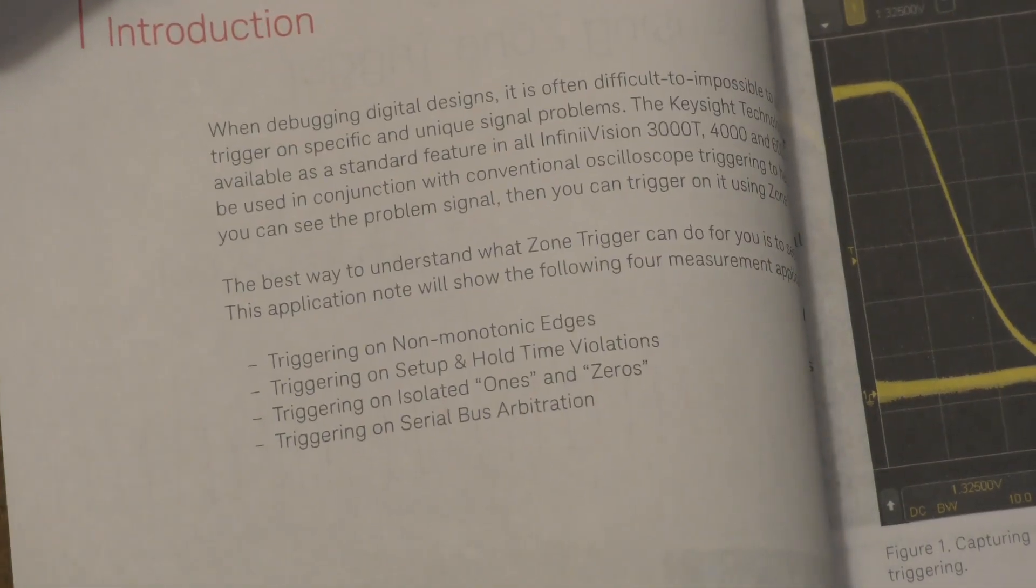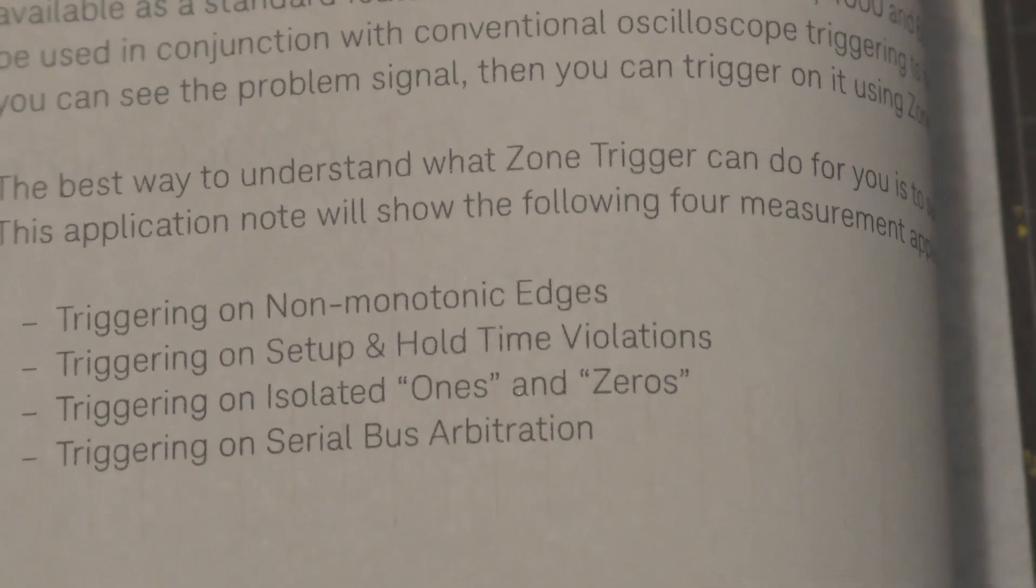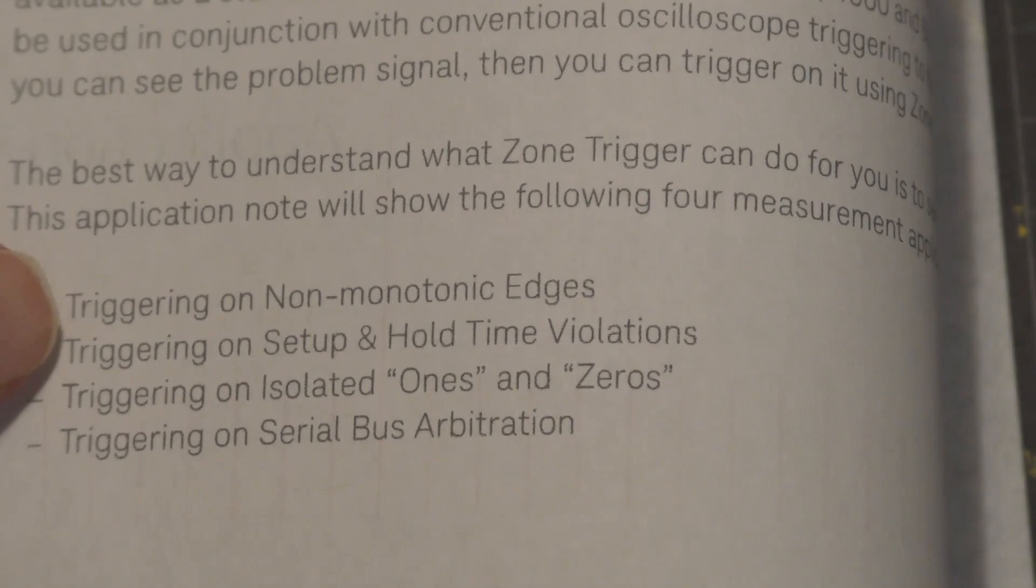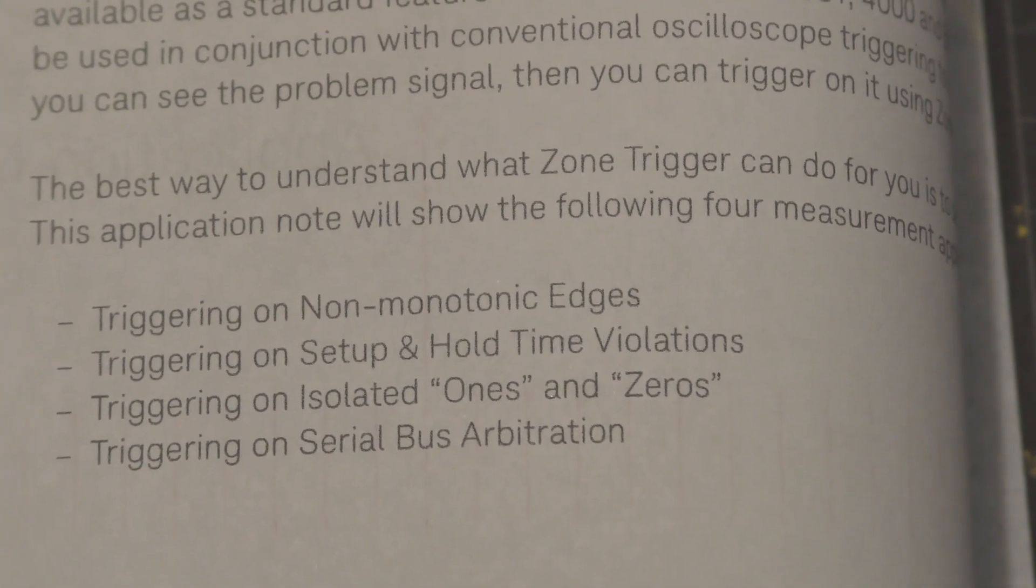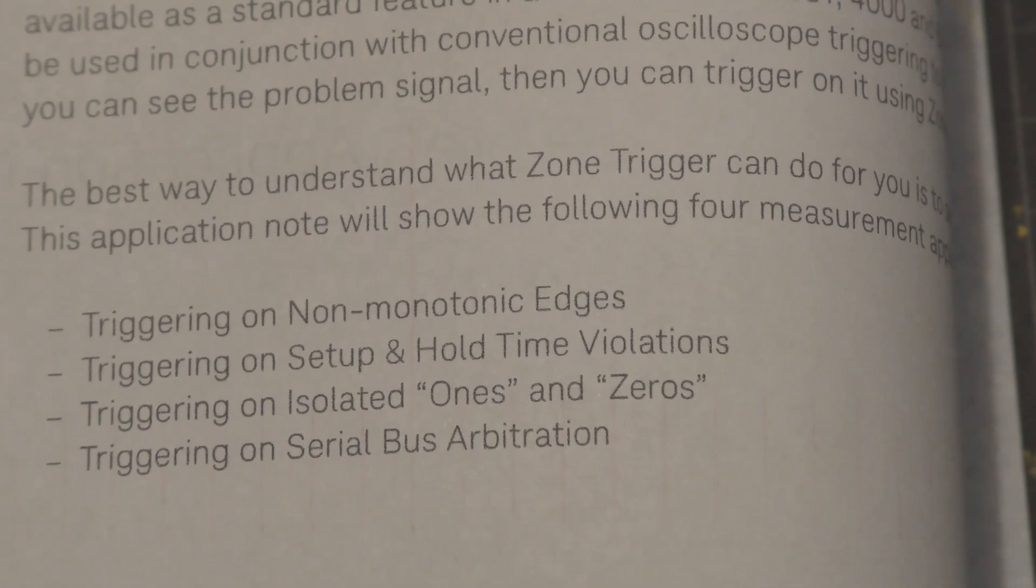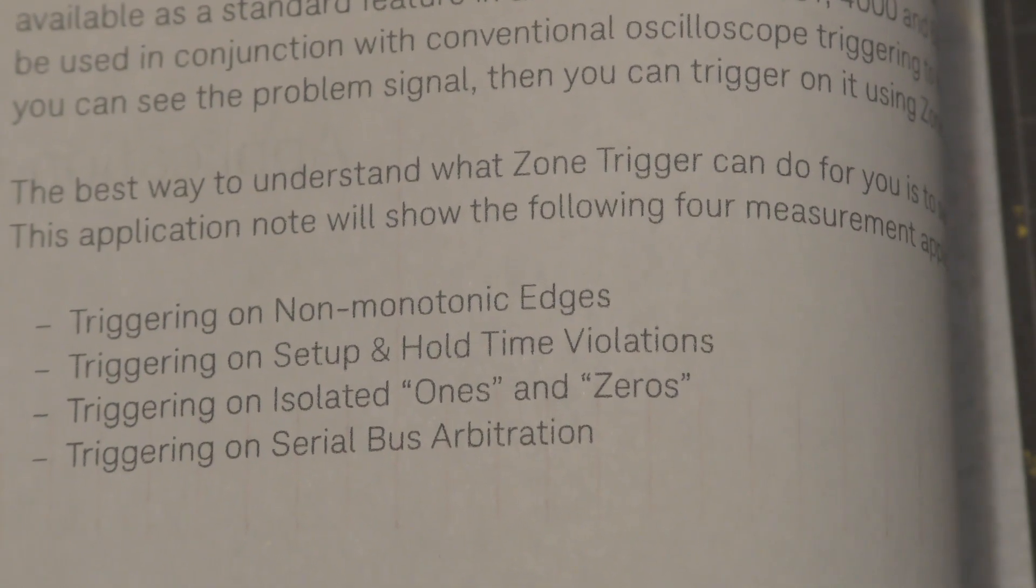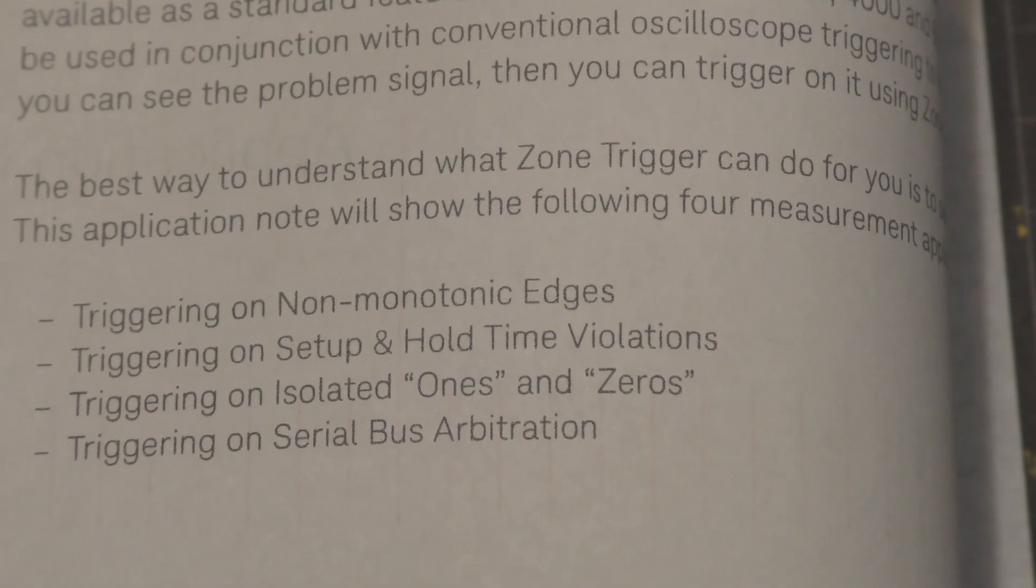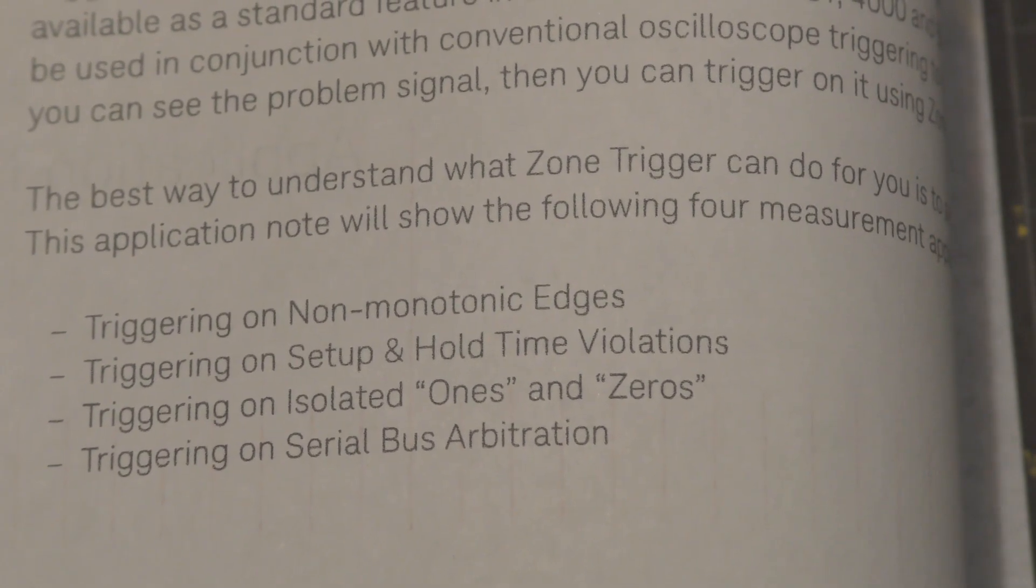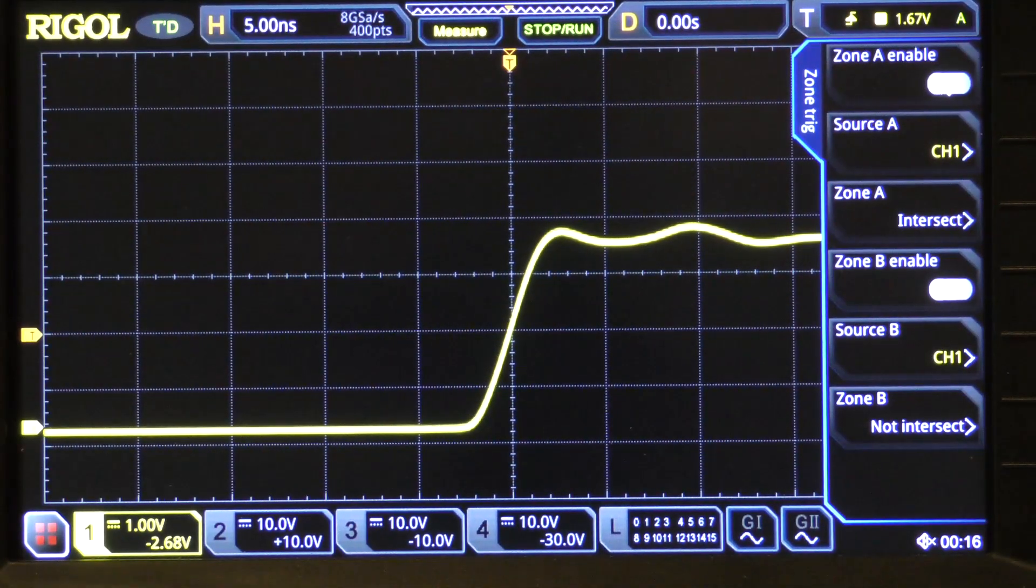They talk about four areas where zone trigger is useful. This morning we are only talking about non-monotonic edges, that very first thing. But, as you notice, it also shows how to use a zone trigger on set up and hold violations and isolated ones and zeros as well as serial bus. And, as I pointed out, the zone trigger qualifies an existing trigger. So, if you are triggering using a serial bus trigger, sometimes called a protocol trigger, you can qualify it with a zone trigger. In other words, modify it, add some additional functionality.